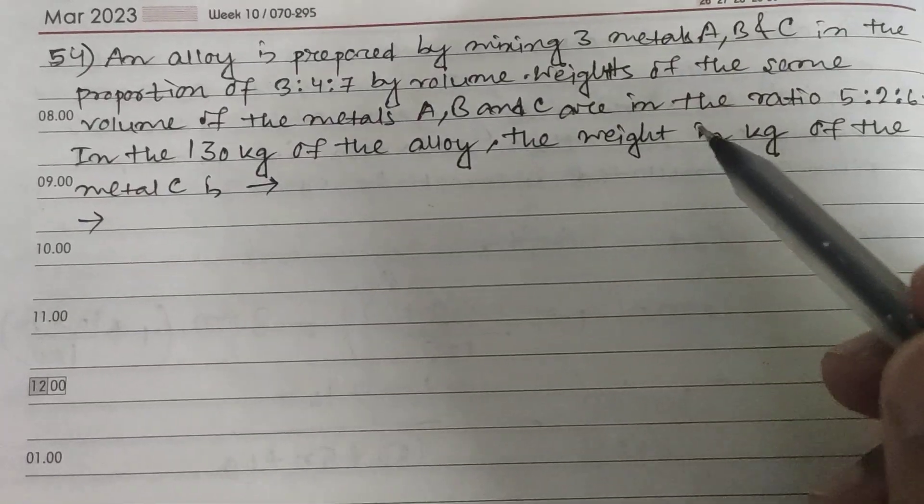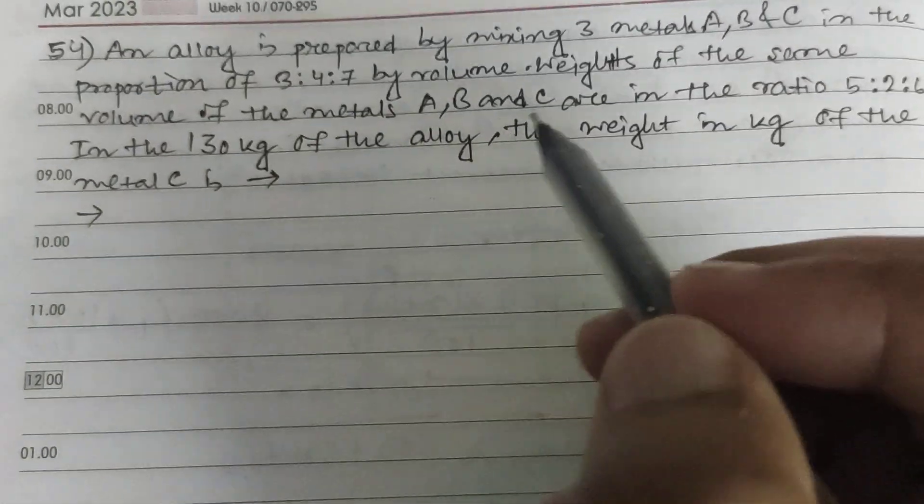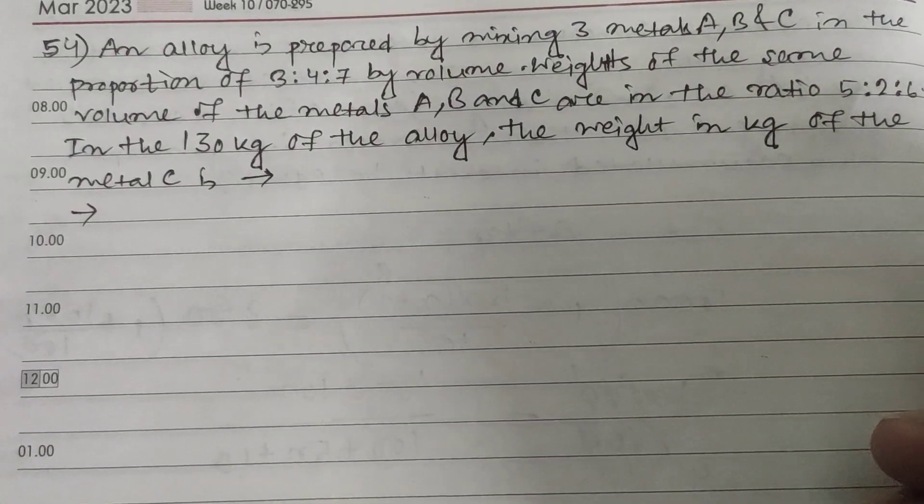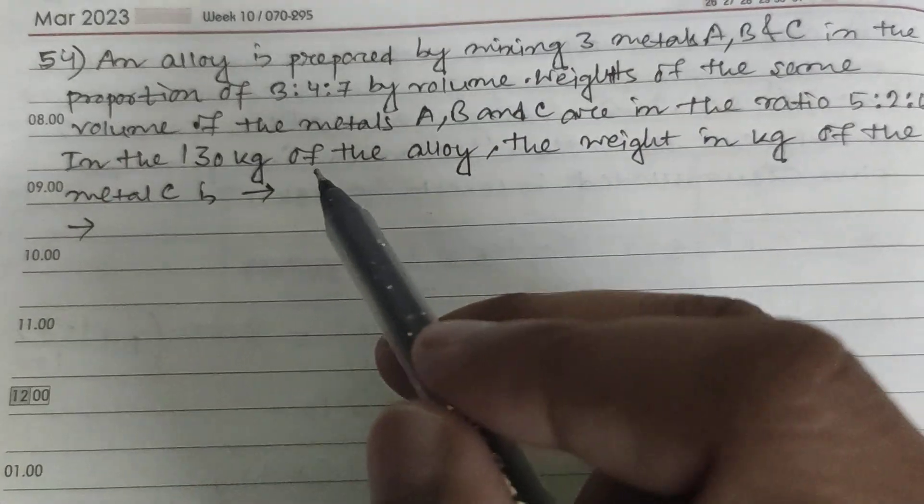Weights of the same volume of the metals A, B, and C are in the ratio of 5:2:6. In total 130 kg of the alloy, the weight in kg of metal C.